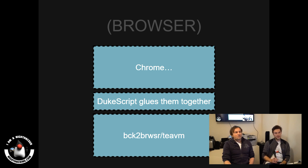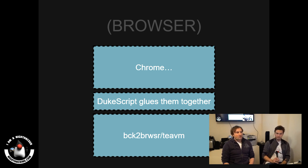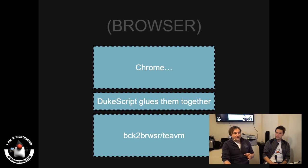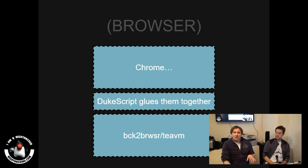It could also run on ARM — I've got a version running on the Raspberry Pi, so we've got DukeScript running on the Raspberry Pi. The more JVMs we have, the more platforms we can use. We only need a very small profile of Java. Back-to-browser doesn't even have the compact profiles — we are compact zero.